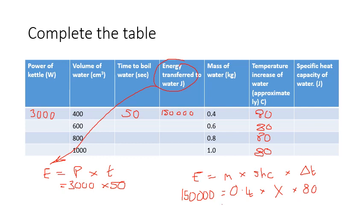The next job is to simplify. So 0.4 times 80 equals 32, and that's going to be 32x. So 150,000 equals 32x, and then I'm going to rearrange the equation, so that means I'm going to need to divide that by 32.